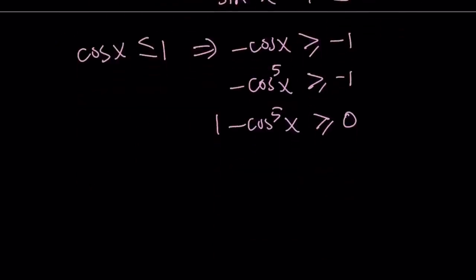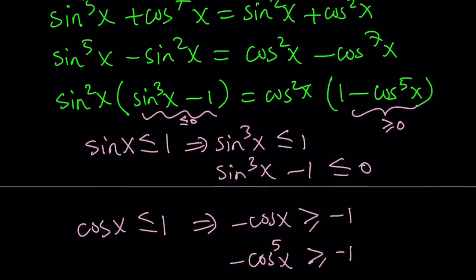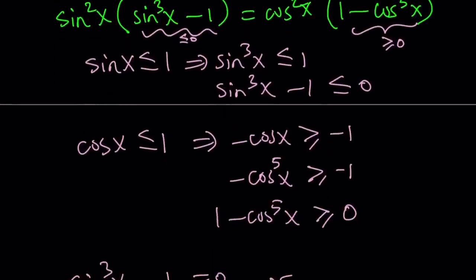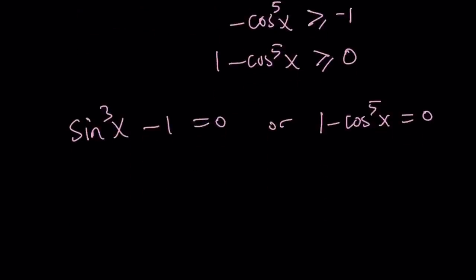So, here's the conclusion. Sine cubed x minus one equals zero or, and it's or, right? One minus cosine x to the fifth power is zero. And this one gives us sine x equals one, because if you cube root, it won't matter.